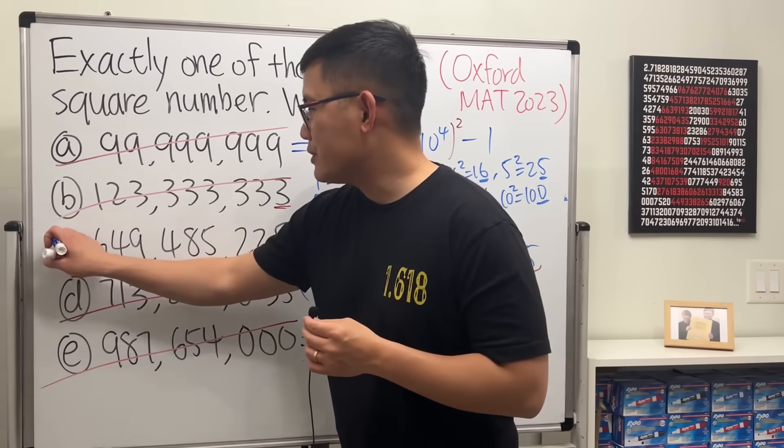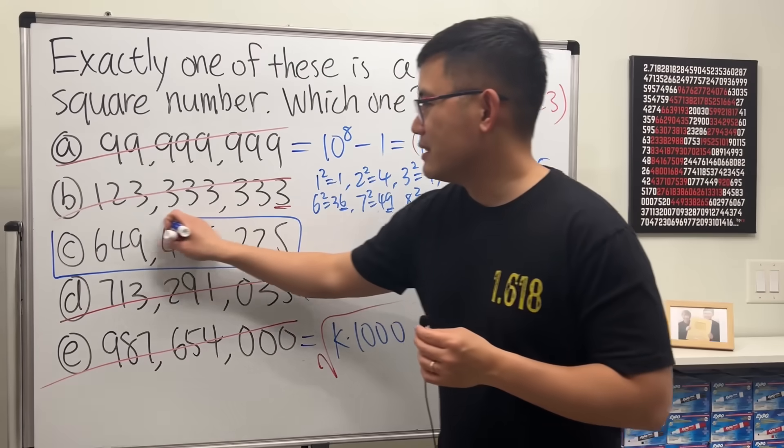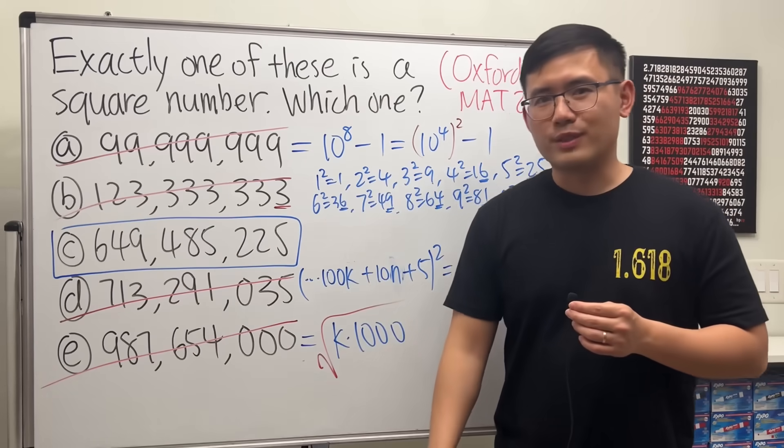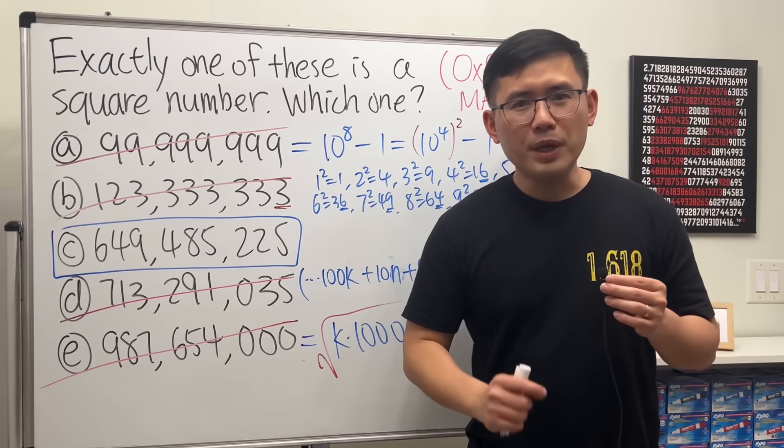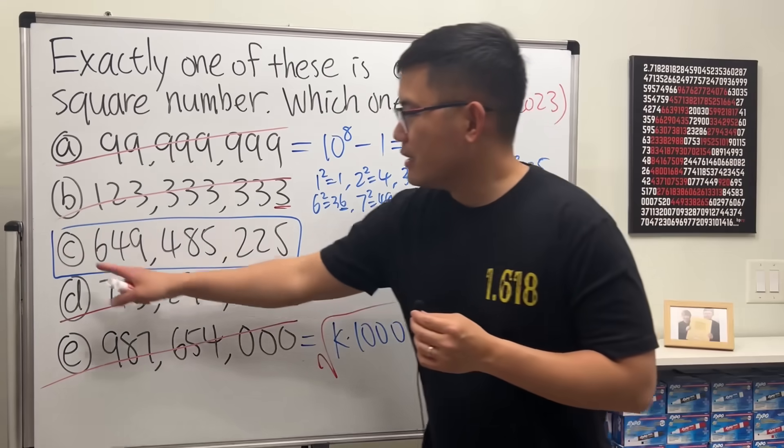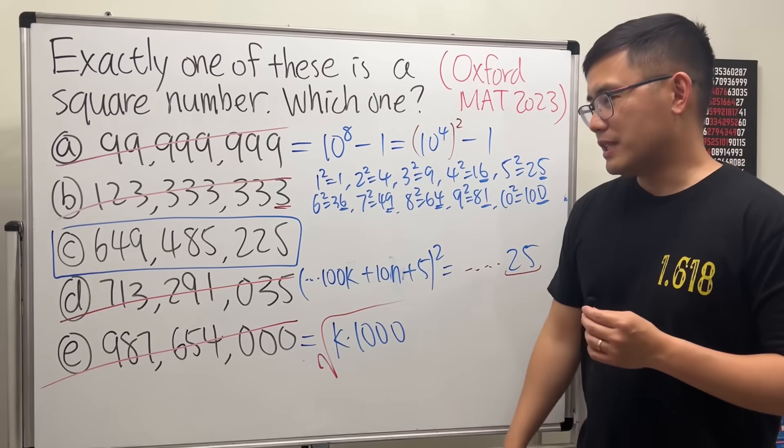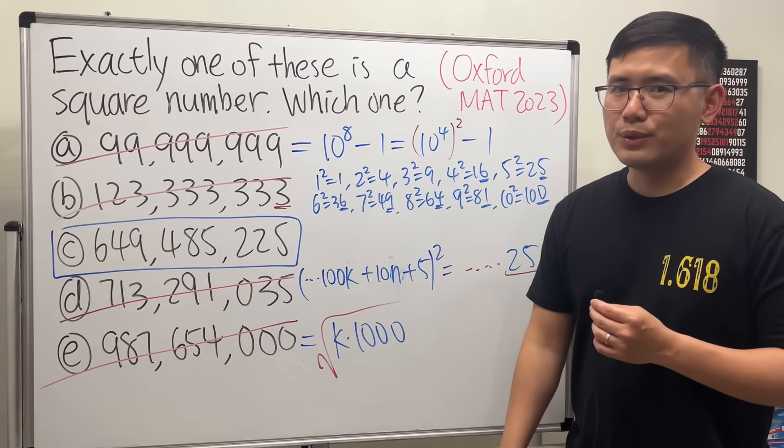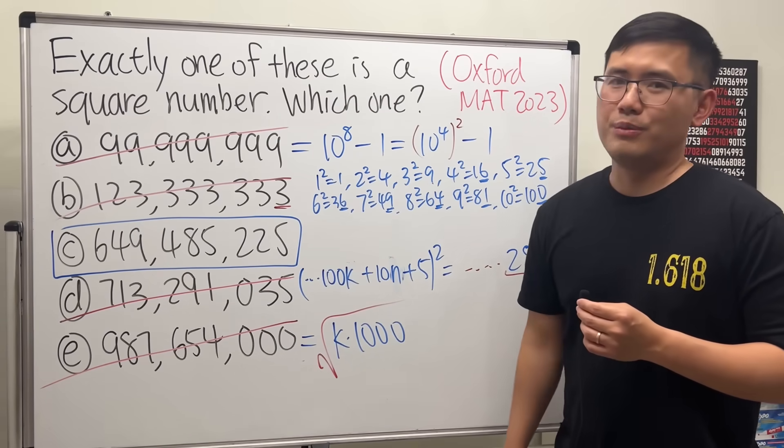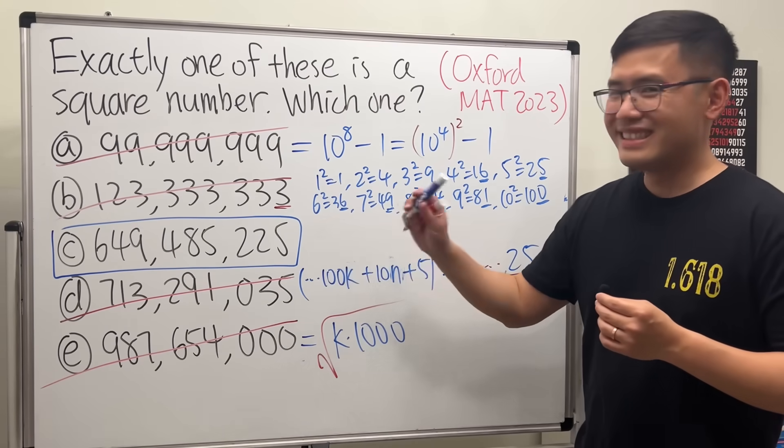Therefore, the only option is C—that has to be a square number. And I'll be super impressed if you can figure out the square root of this number without a calculator. And if you know how to do it without calculator, please show me too. Anyway, that's it.